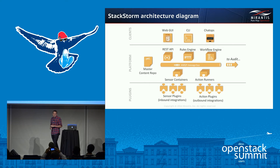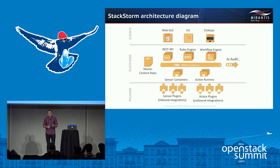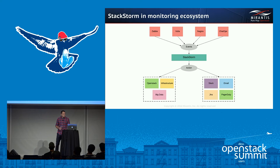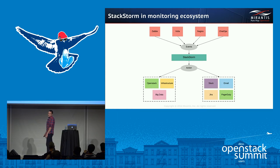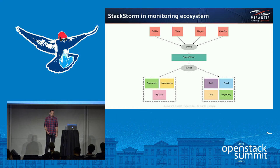Here's the architecture of StackStorm. It has sensors to listen for events, a rules engine to classify the event, and action runners or workflows to run actions based on the classified event. You can easily develop your own sensor plugins and action plugins. In our infrastructure, all the monitoring systems at the top trigger events and StackStorm listens for them. Based on the event, it either triggers an action to the infrastructure — like restarting a service or rebooting a VM — or triggers notification of on-call engineers, like escalations or just notifications.